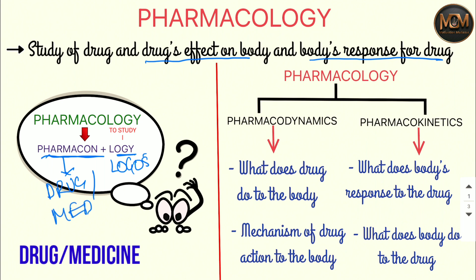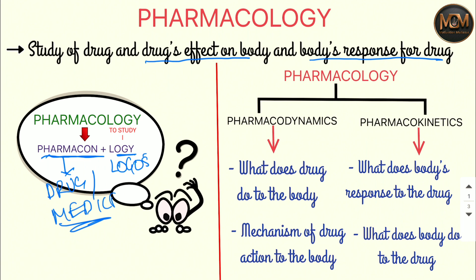So 'pharmacone' means drug and medicine as well. Now let's understand what is the drug and medicine. Drugs and medicine are two similar words — most people get confused while differentiating between these. So drug is nothing but a chemical constituent, or we can say it is in raw form.